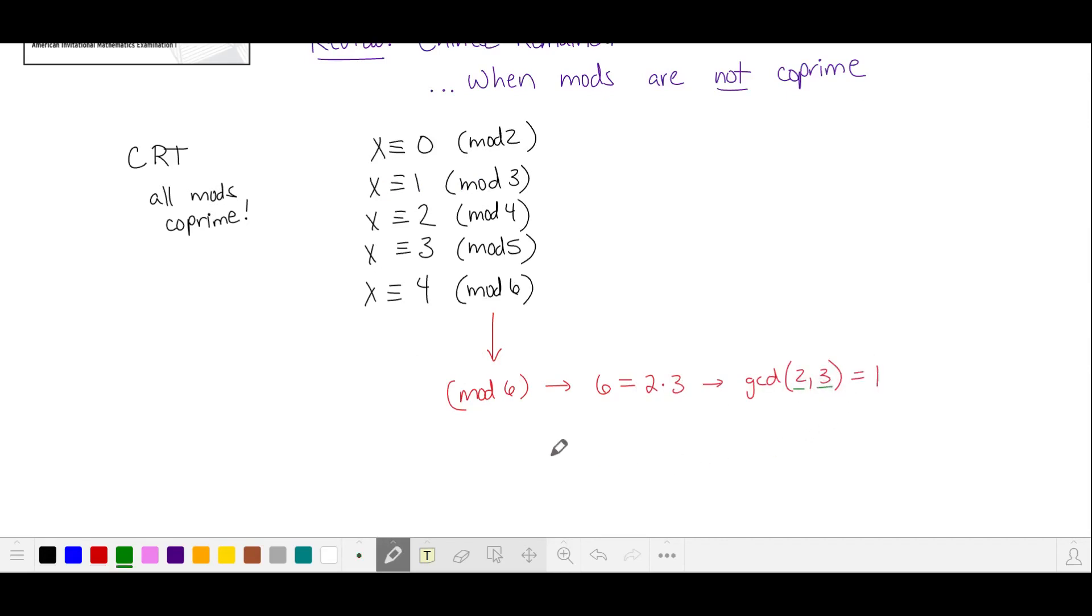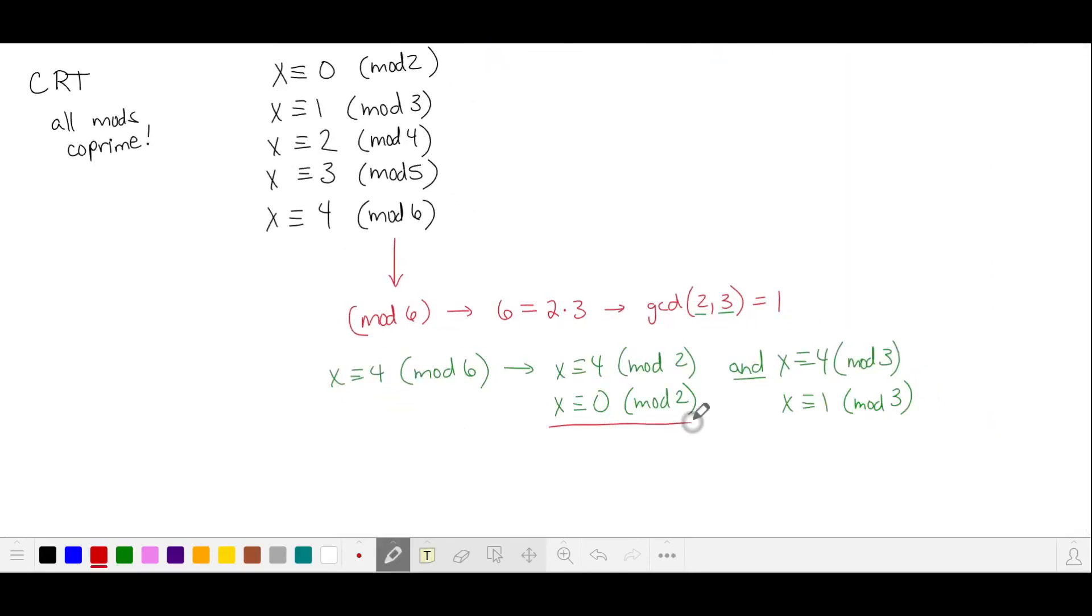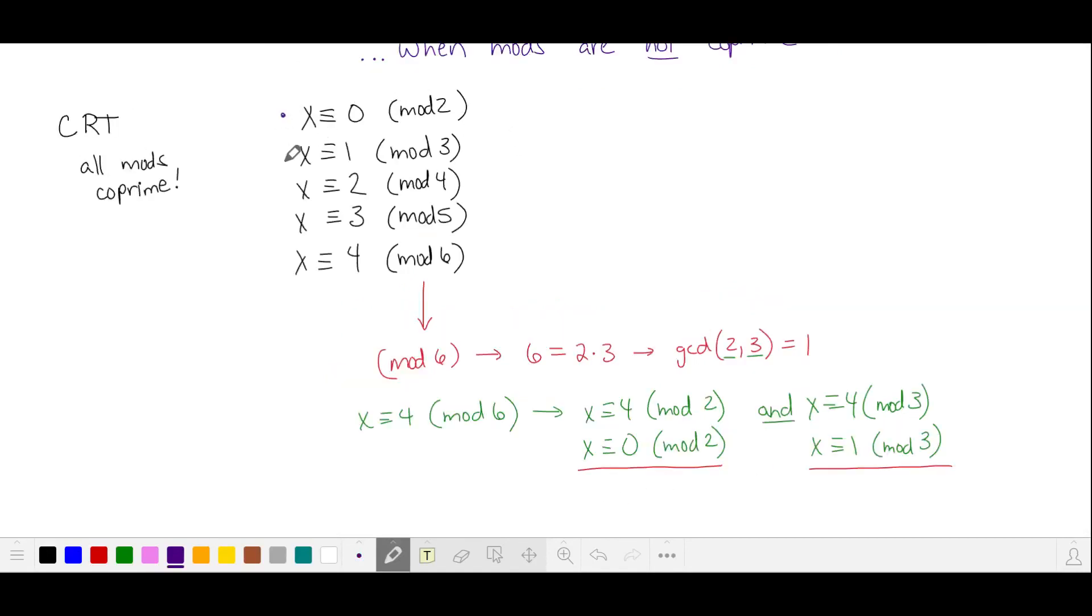We consider each of these factors in turn. So if x is four more than a multiple of six, it's going to be four more than a multiple of two and four more than a multiple of three. This simplifies to zero mod two and one mod three. And we notice that we already have these equivalences in our original problem statement. So x equals four mod six is redundant, and we can discard this.